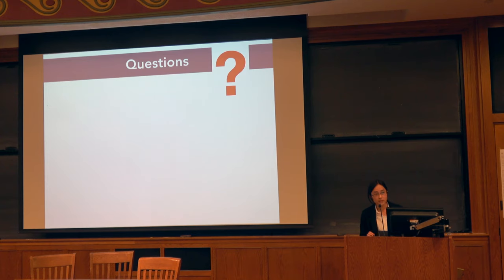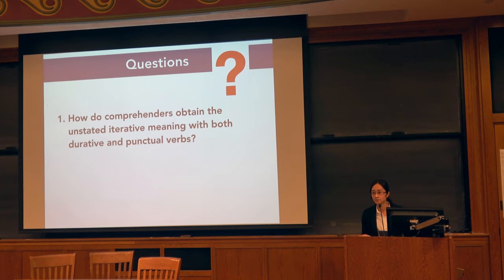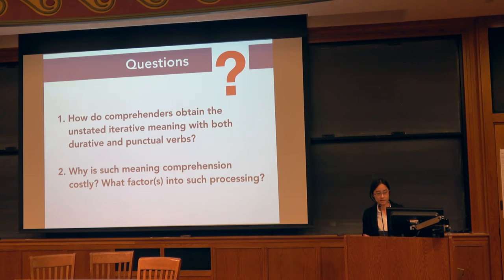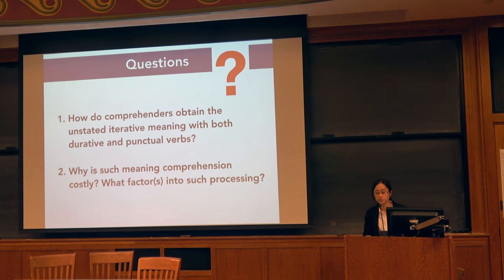Several questions emerge at this point. First, how do comprehenders obtain unstated iterative meaning with both iterative and punctual verbs? Second, if it's not because of the iter-operator, what makes it costly during real-time comprehension? We are seeking to discover what individual factors and linguistic factors contribute to such meaning computation.